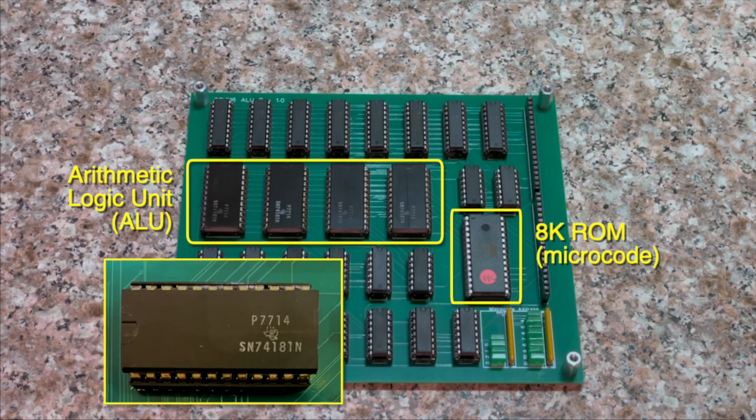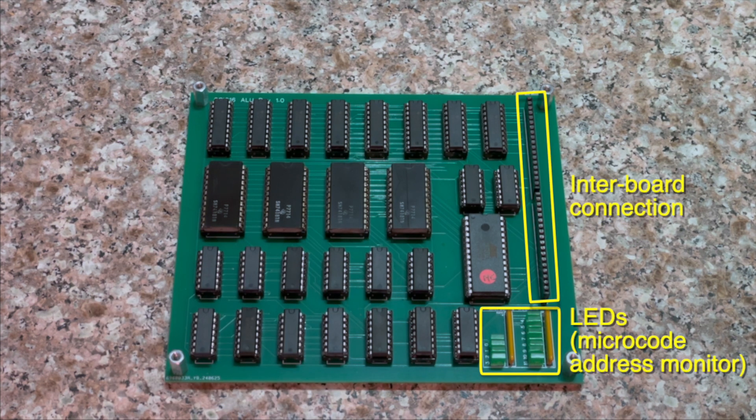Looking closer at this chip, we see the date code P7714, which indicates that this chip was manufactured in the 14th week of 1977, around 47 years ago. This board has troubleshooting LEDs to monitor the microcode address and a connector that the middle board plugs into.